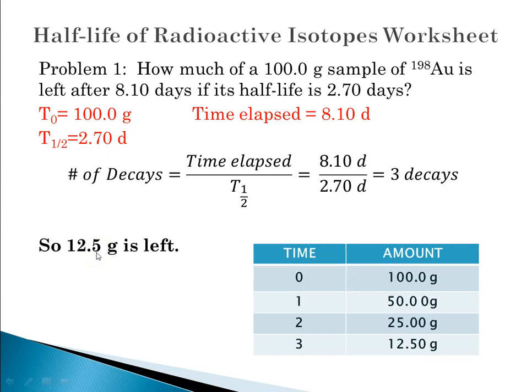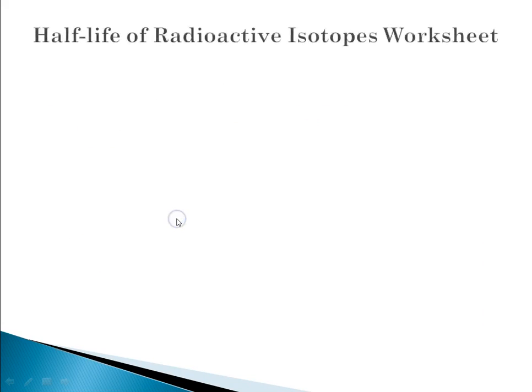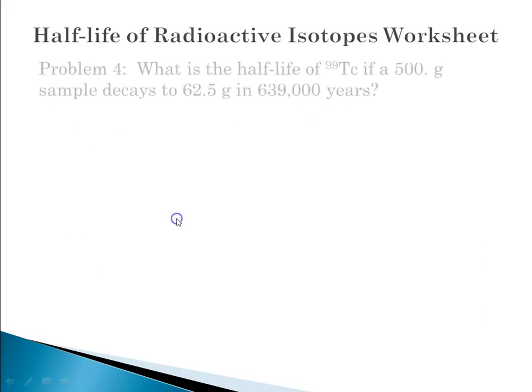And the reason I rounded just to three sig figs is because these two numbers here for the time elapsed and T₁/₂ were reported to you with three sig figs. So I stuck with three sig figs. The second one I want to solve for you is number four on the worksheet, which is a slightly different question.